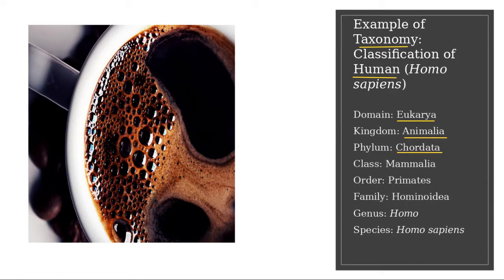Phylum Chordata has several classes; one of them is Mammalia. Mammalia is a group for animals that give birth. So human gives birth, and therefore human is included in class Mammalia. Class Mammalia has several orders; one of them is Primate — the highest order. This is a group for animals like human, chimpanzee, and gorilla.